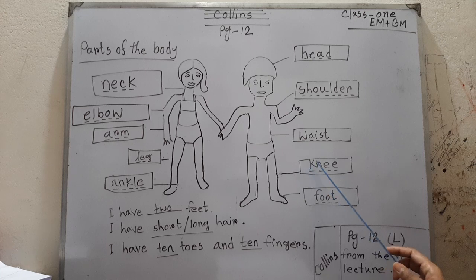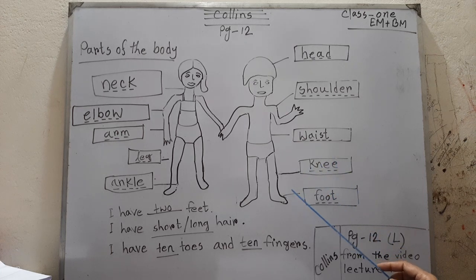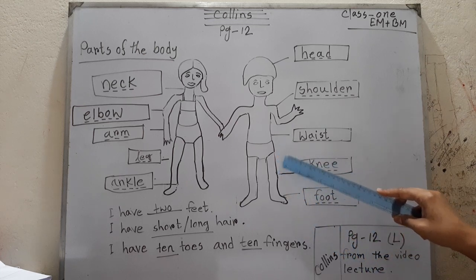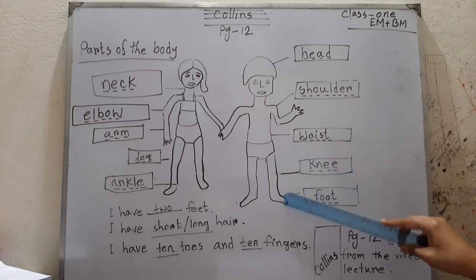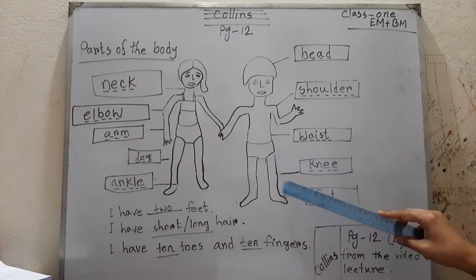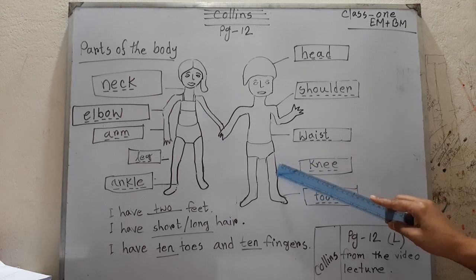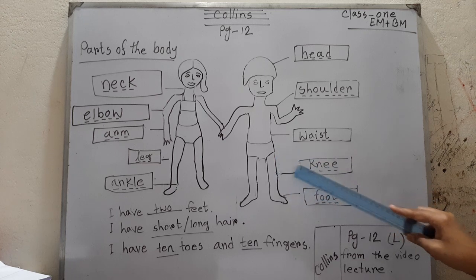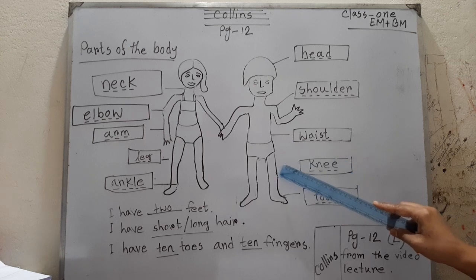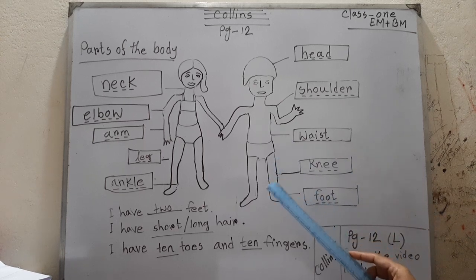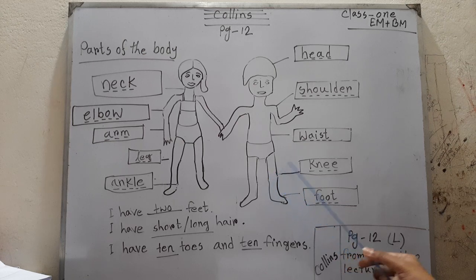Then: knee — K-N-E-E. Knee means 'hatu' in Bengali. The joint between the thigh and the lower leg. The leg has an upper part and a lower part — the connecting joint between them is the knee.